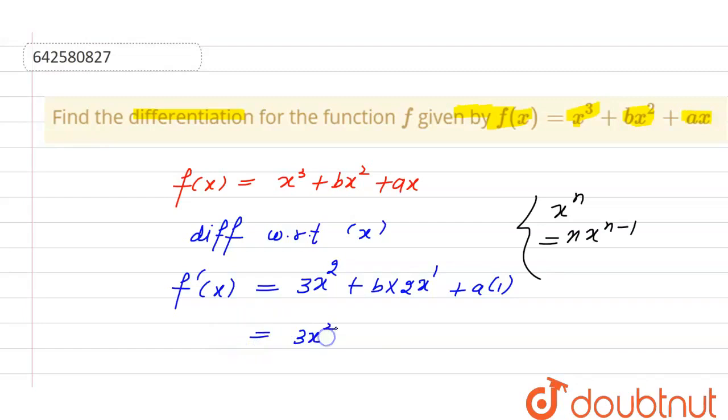So, we will get 3x square plus 2bx plus a. This is the differentiation of the function. Thank you.